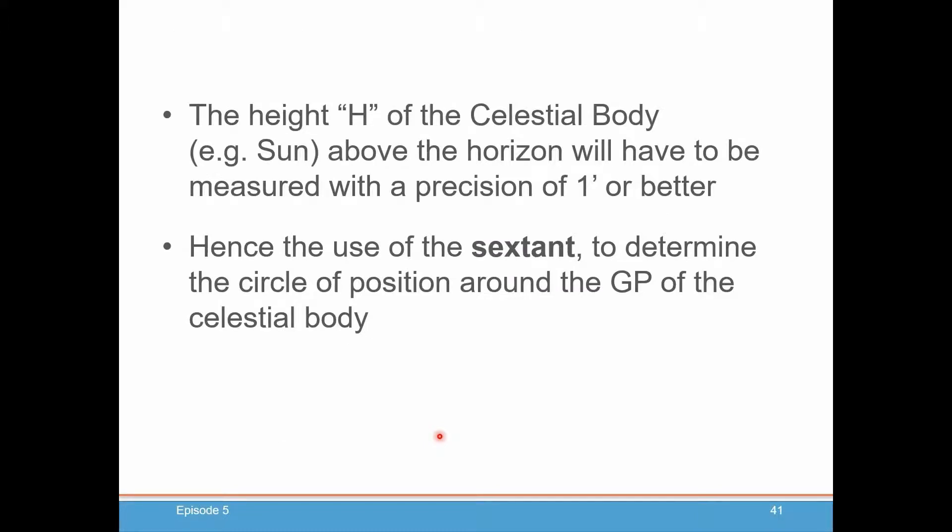The height of that celestial body above the horizon, we'll want to measure with the precision of one nautical mile, one minute of arc or better, which gives us one nautical mile of precision in our position of our boat. We use that sextant because it gives us that type of precision to determine the circle of position around our GP.